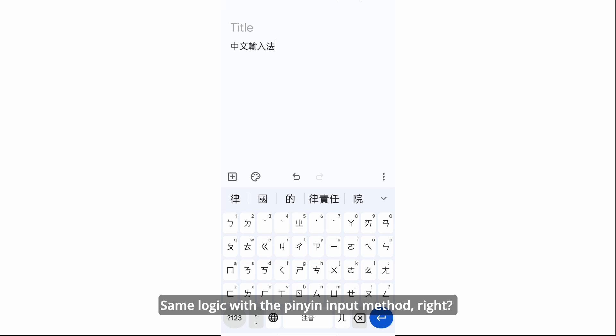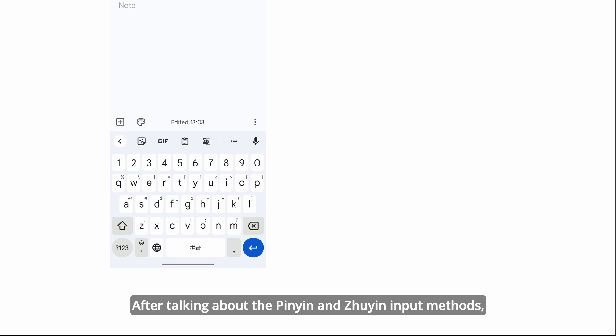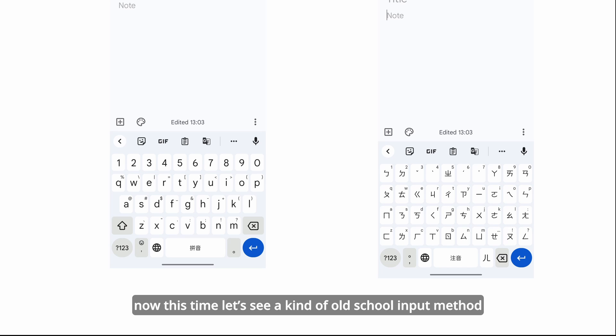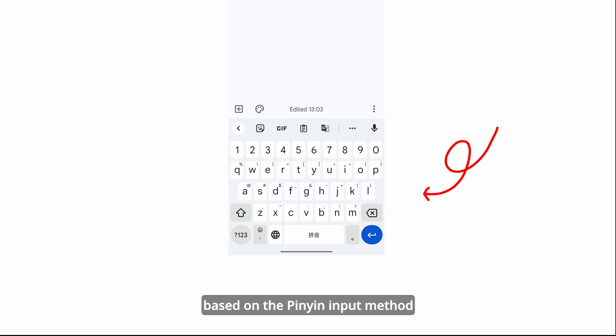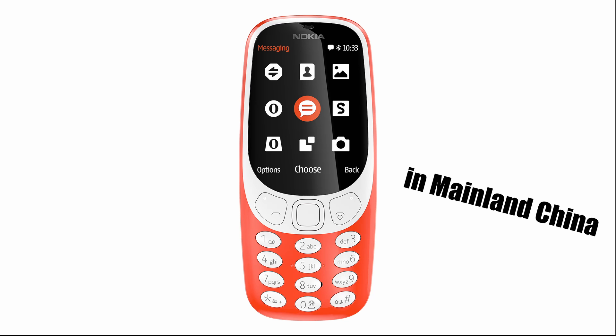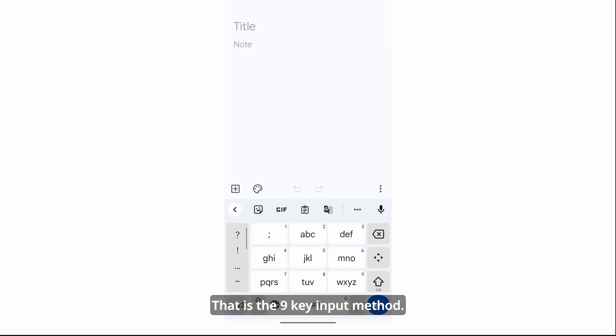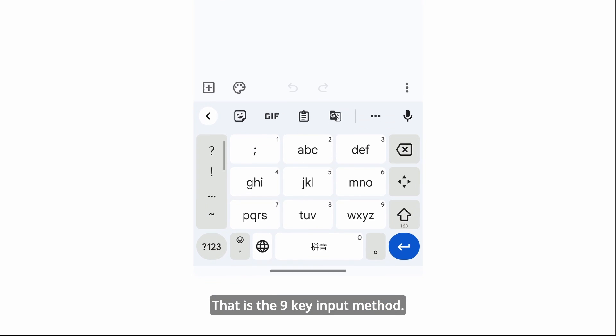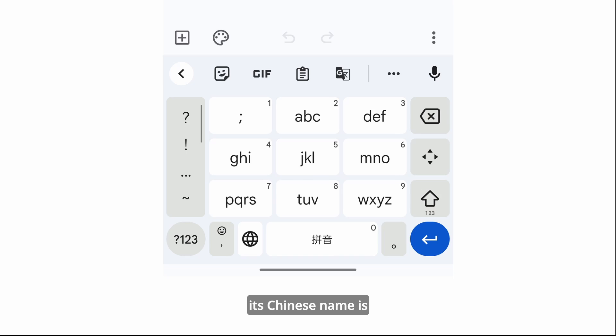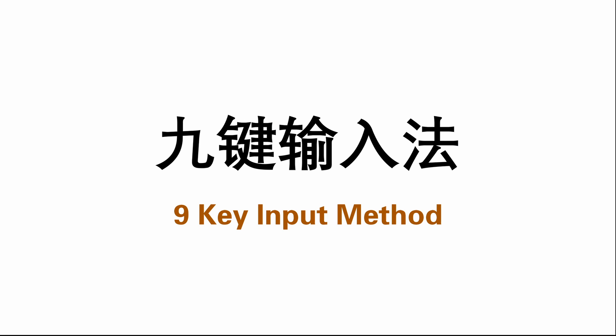After talking about the pinyin and the Zhuyin input method, now this time let's see a kind of old school input method based on the pinyin input method from the feature phone era in mainland China. That is the jiugongge input method. Its Chinese name is jiugongge shurufa, or just call it jiugongge.